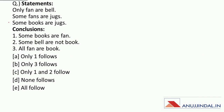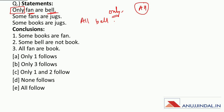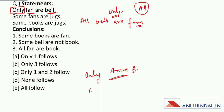Next question. There is a word in the statement: 'only'. Joh only ka Venn diagram hoota hai, woh all ka reverse hoota hai. Matlab ki agar 'only fan are bel' hai, toh joh iska Venn diagram hooga, woha 'all bel are fans' hooga. So if in the statement it is given that 'only A are B', then the Venn diagram will be of 'all B are A'. I hope you remember this.